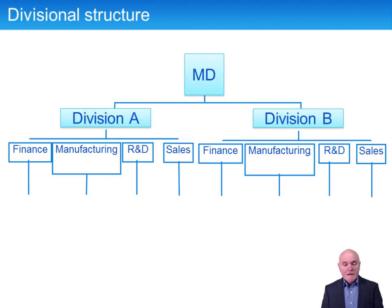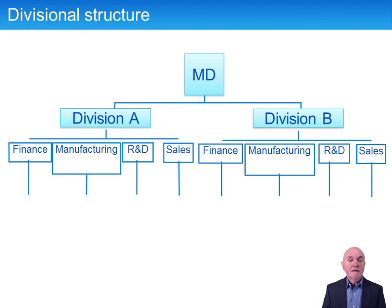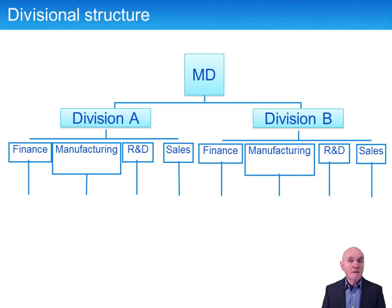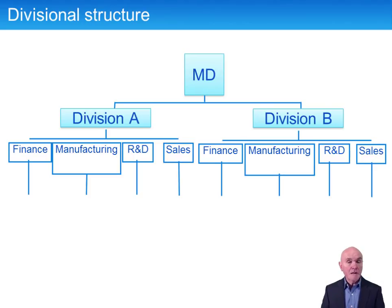So you have two divisions with finance, manufacturing, R&D, and sales in each. Alternatively, it could be divisionalized by major product line — for example, a large UK chemical company that made both paint and agricultural chemicals, where there was nothing in common between the manufacturing, customers, or suppliers. Once you have divisionalized, it also opens up the way to compare how each division is going, providing an internal benchmark and almost a competitive environment to see which division makes best use of its capital.